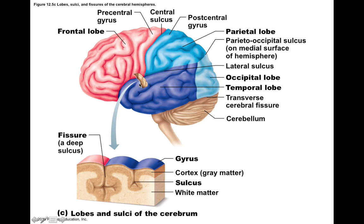If you take a cross-section of the lobes on the outer surface of the cerebral hemispheres, you find that the outermost layer is gray matter and the innermost layers are white matter. The cortex — which is the outer layer — is made of gray matter. In fact, cortex means bark. Think of it as the outermost layer of your brain like bark on a tree. The cortex is made of many layers of neuron cell bodies, which is why it has a darker appearance.